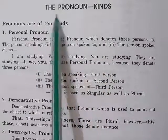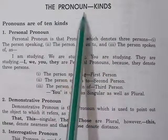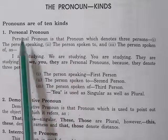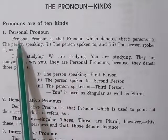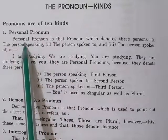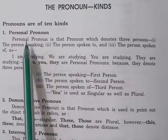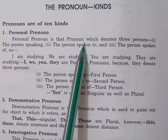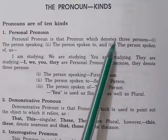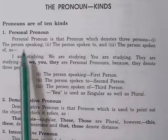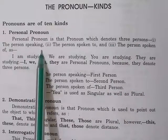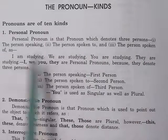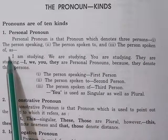Kinds of the pronoun. There are 10 kinds of pronoun. The very first is personal pronoun. Personal pronoun is that pronoun which denotes three persons: the person speaking, the person spoken to, and the person spoken of.